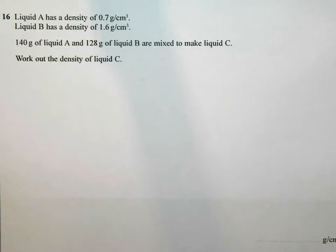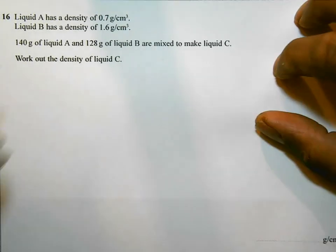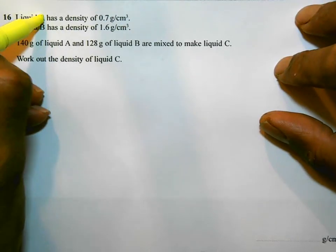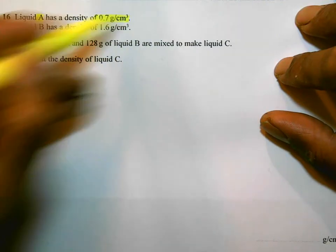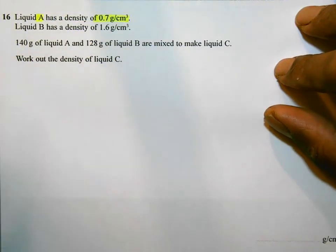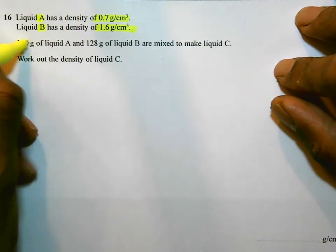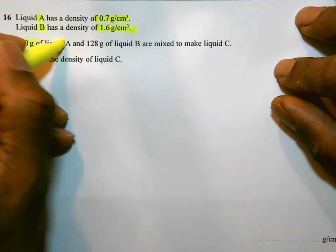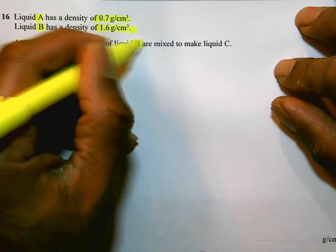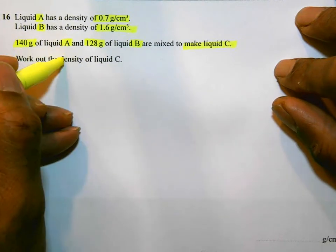This is question number 16 on the June 2015 calculator paper. Looking at this question, it says liquid A has a density of 0.7 grams per centimeter cubed. Liquid B has a density of 1.6 grams per centimeter cubed. 140 grams of liquid A and 128 grams of liquid B are mixed together to make liquid C. Work out the density of liquid C.